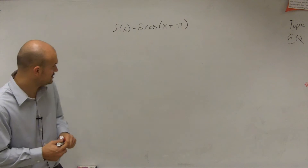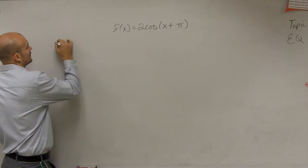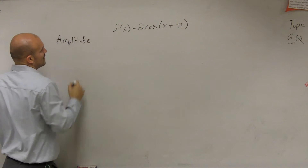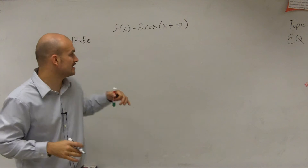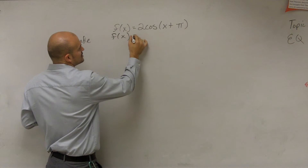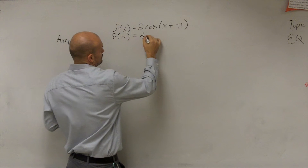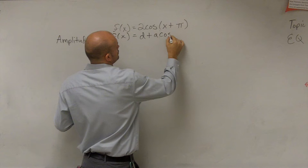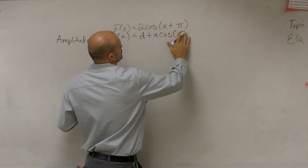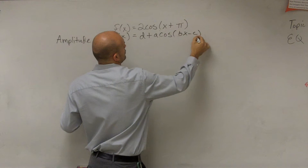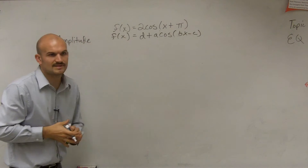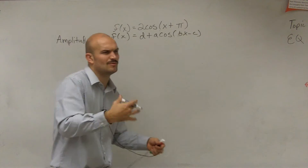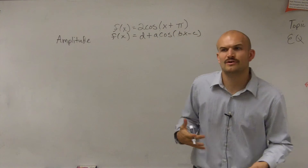The easiest thing I like to do is find the amplitude first. Remember, the amplitude is the absolute value of a. When looking at a problem like this, it's also helpful to write your standard form so you can remember: what was a, what was b, what was c, and how do I figure out all of this?